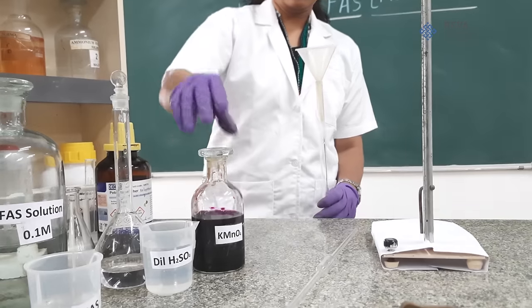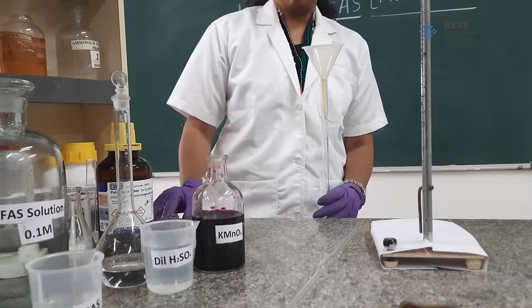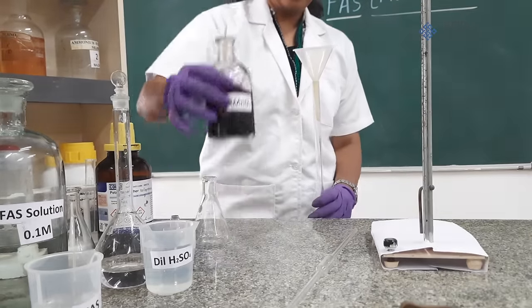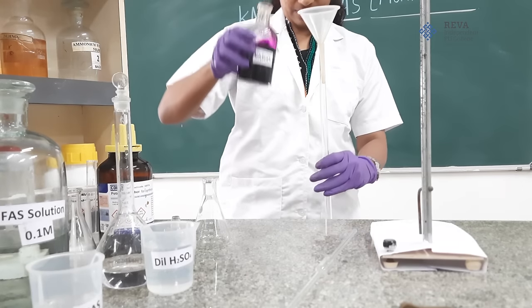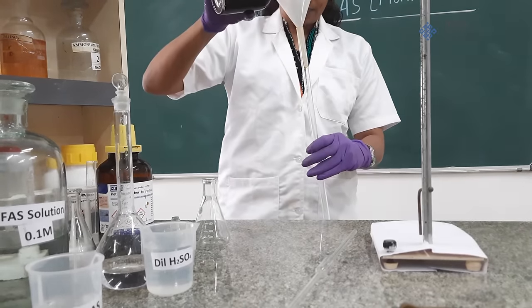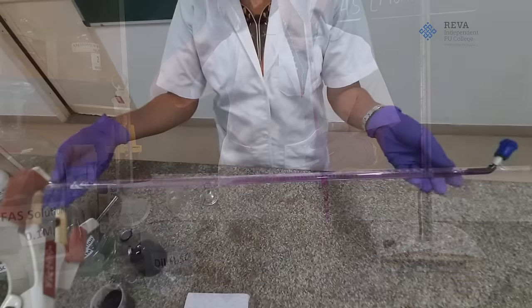The procedure will be as follows. Potassium permanganate solution is a purple colored solution. Now we are going to take this solution, a little of it in a burette, then rinse the burette.